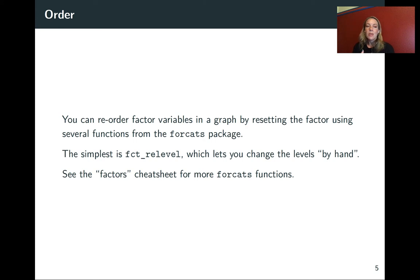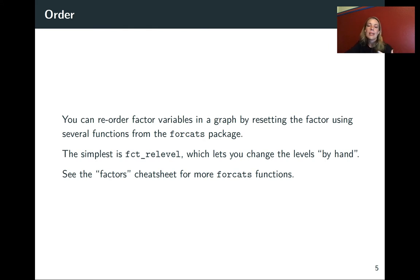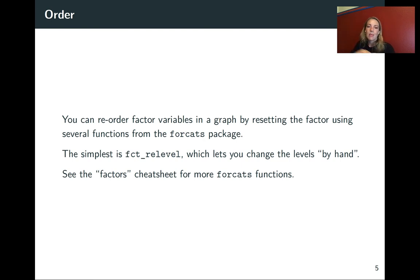The simplest of these is fct_relevel, and this changes the levels by hand — you have to put them in manually. We'll also look in later weeks at some different functions that let you reorder things by another column, like the example where they were ordered by the mean time that each player played.